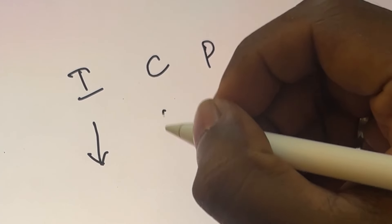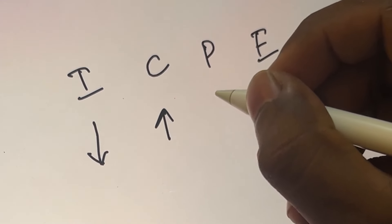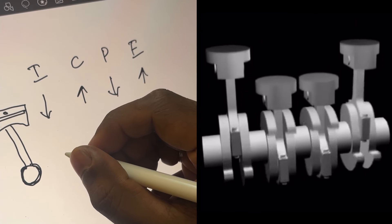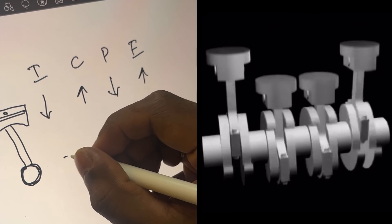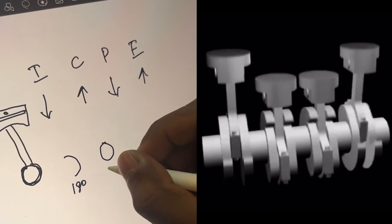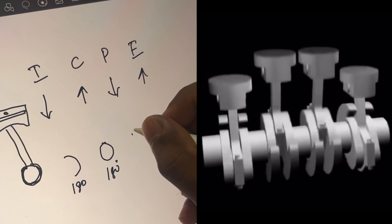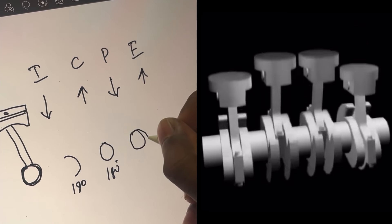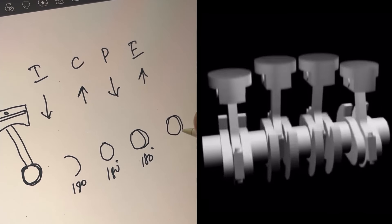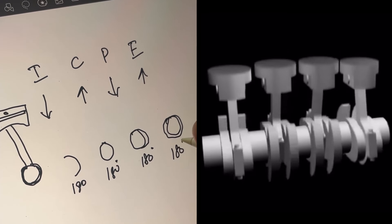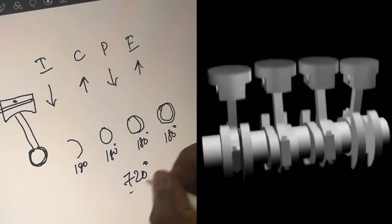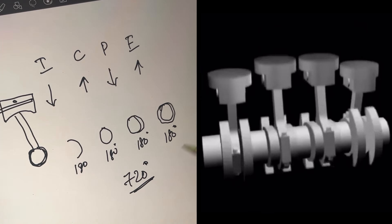In the intake stroke, the piston moves down. Compression and exhaust strokes follow. In the intake stroke, the crankshaft handles 180 degrees. The intake stroke and exhaust stroke alternate. The crankshaft has 120 degrees of separation in this configuration.